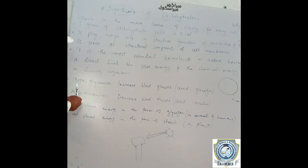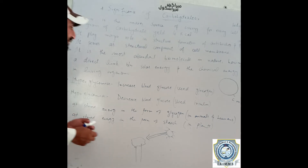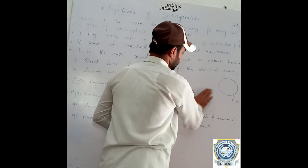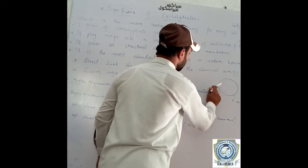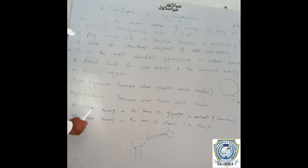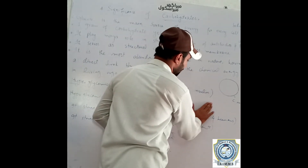Hyperglycemia refers to an increase of blood glucose levels. Insulin is used to control and maintain blood glucose levels. Hypoglycemia refers to a decrease in blood glucose levels.